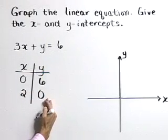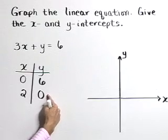Let's go ahead and plot these intercepts, starting with the x-intercept at 2, 0.